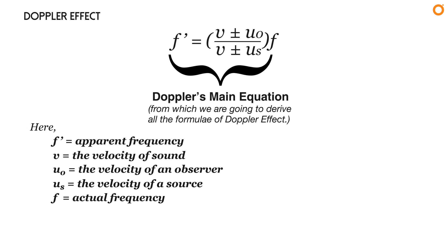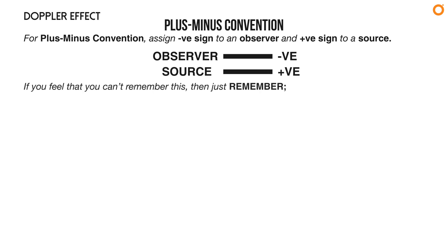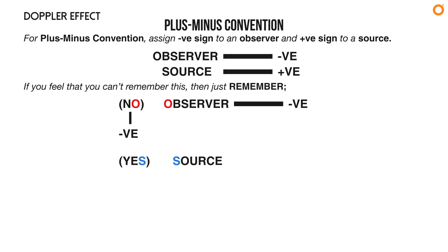Before deriving the formulae from Doppler's main equation, we have to learn a very simple convention called the plus-minus convention. I am assigning a negative sign to an observer and a positive sign to a source. To remember this: think of 'NO' when an observer is considered — 'N' for negative, 'O' for observer — and 'YES' when a source is considered, since YES represents positive source means positive.